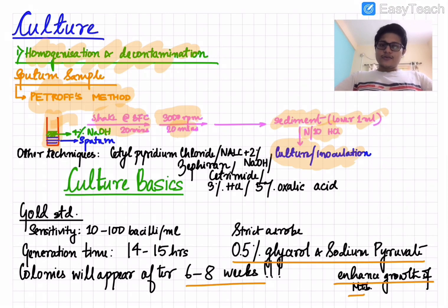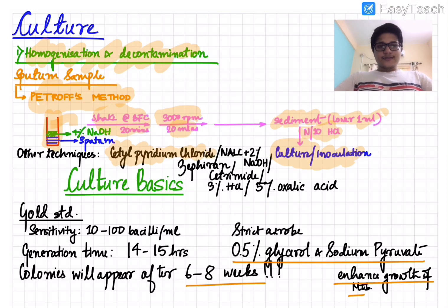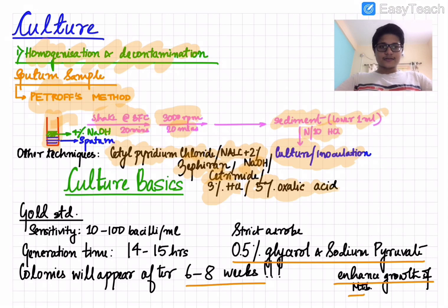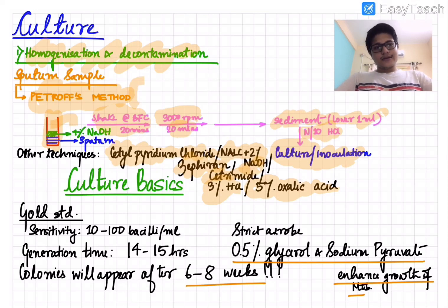Other decontamination techniques include cetylpyridinium chloride, N-acetyl cysteine with 2% NaOH, zephiran (benzalkonium chloride), NaOH or cetrimide, mineral acids like 3% HCl, or 5% oxalic acid. However, the WHO recommended technique is Petroff's method.